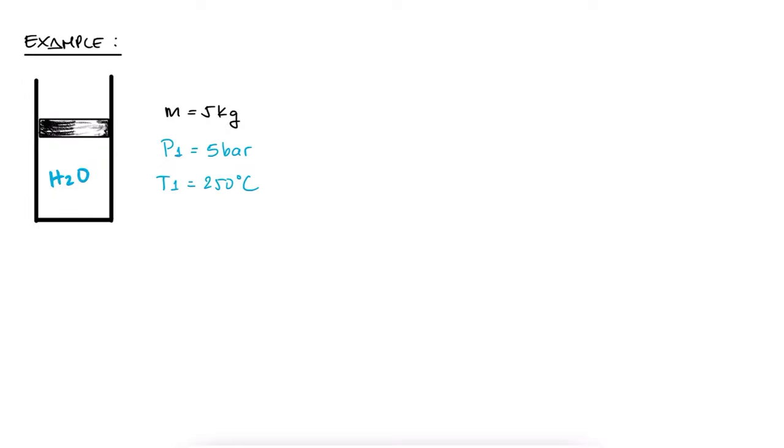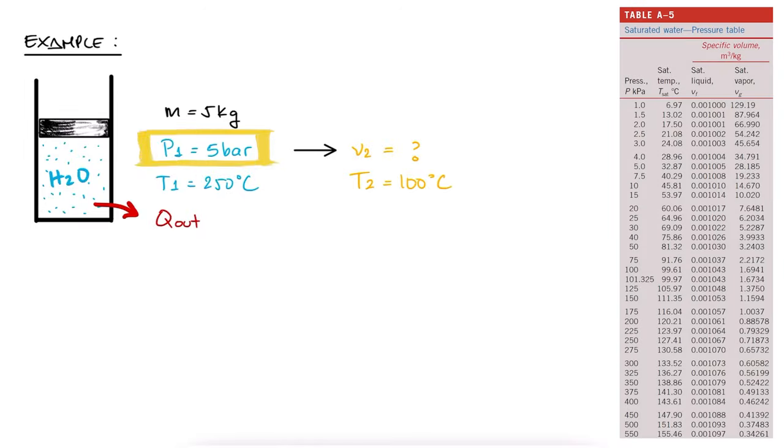Let's recall the initial state of the third problem example for the previous lecture. We had 5 kg of water, contained in a piston cylinder assembly, initially at 5 bar and 250 degrees Celsius. If heat is slowly removed to cool down the water vapor to around 100 degrees Celsius, what is the new specific volume? Try solving this simple example yourself now, before watching the solution. And if you want to check out other examples where we use what we learned here, make sure to check out the links in the video description.